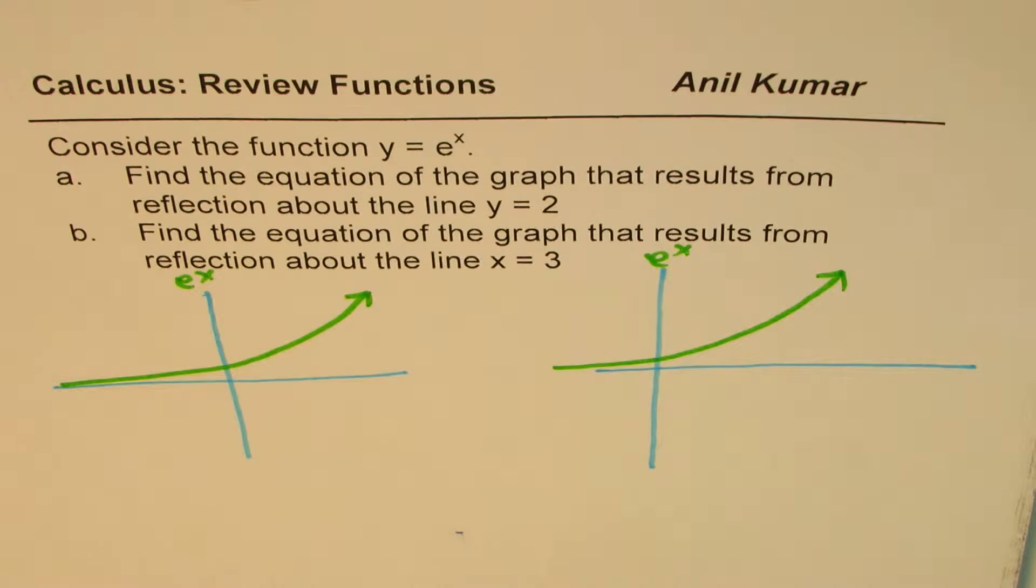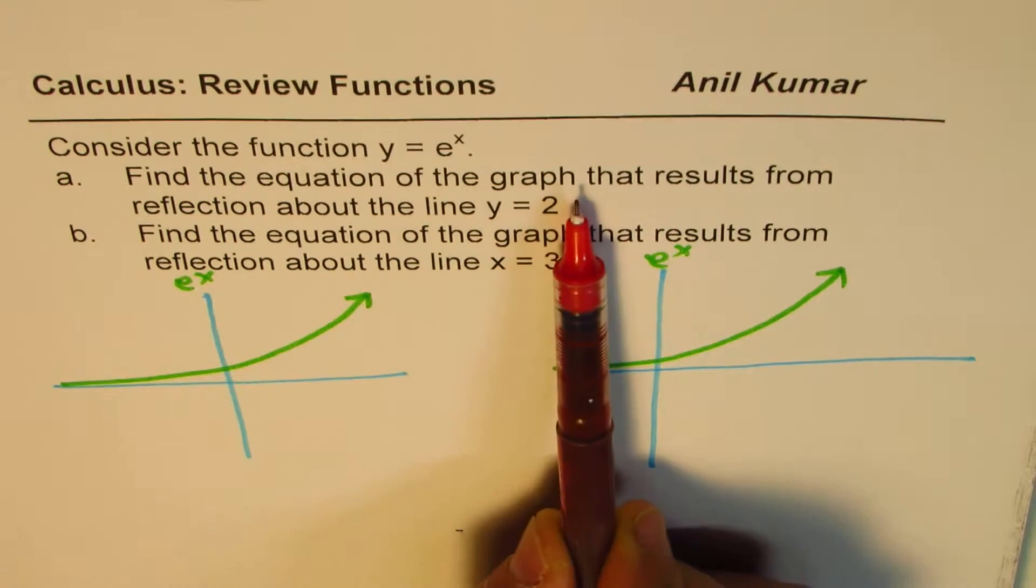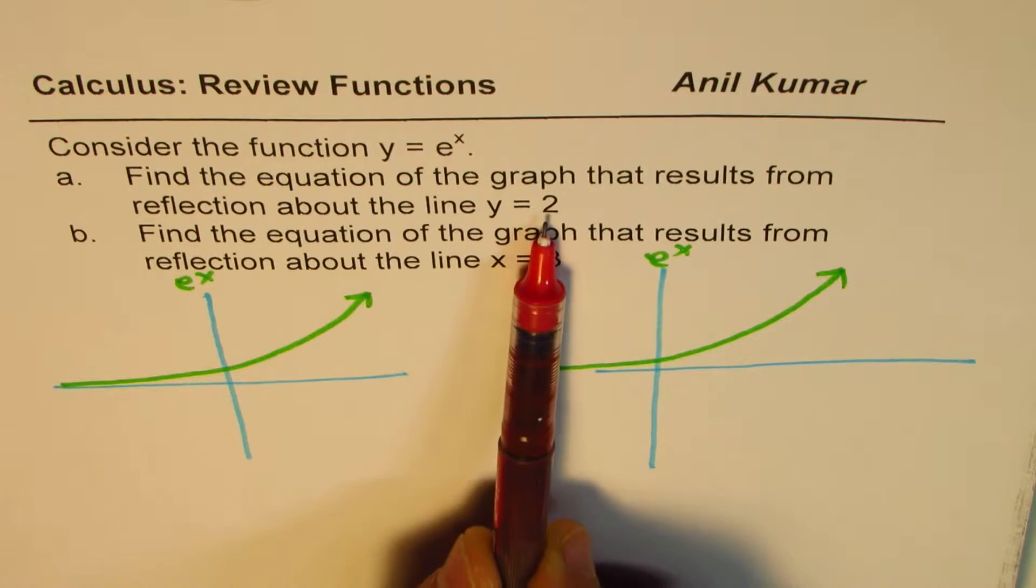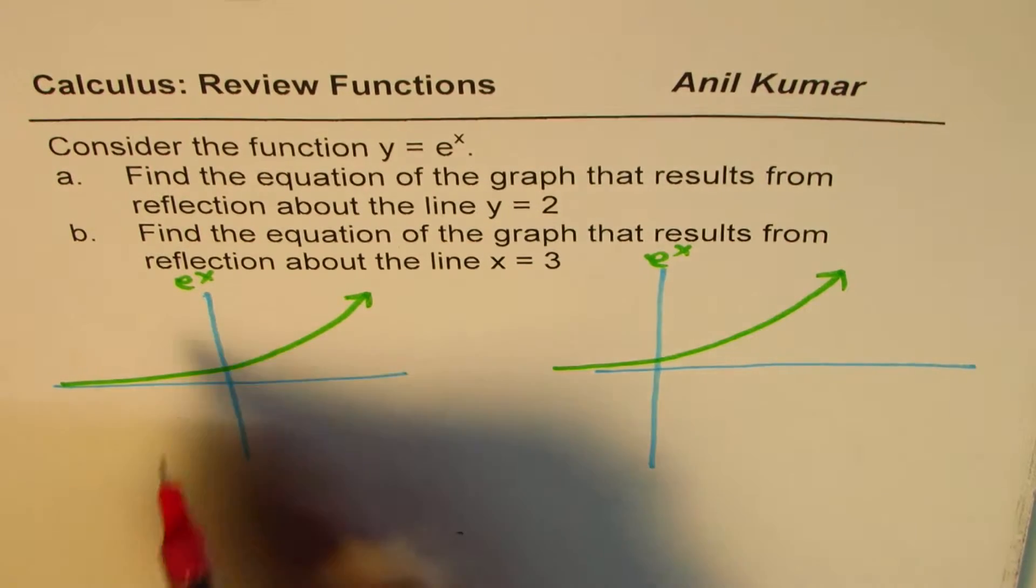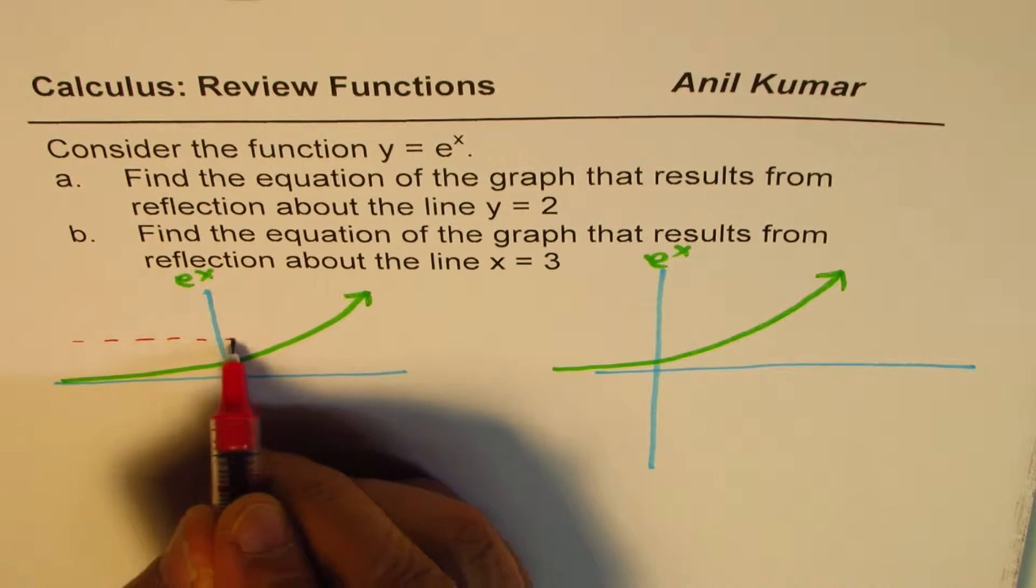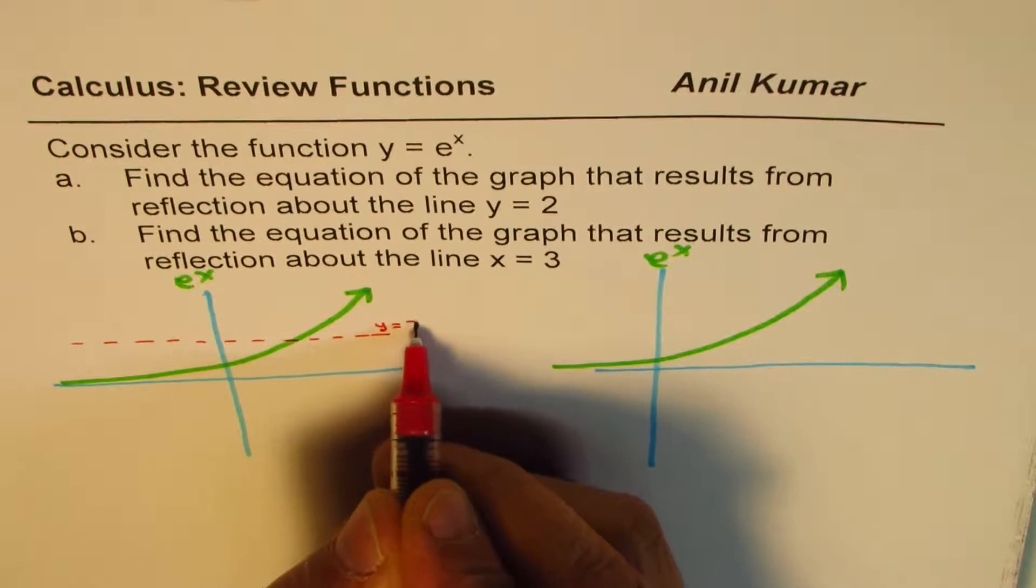Now, part A of the question is, find the equation of the graph that results from reflection about the line y equals 2. Now, what is that line y equals 2? Line y equals 2 will be a horizontal line. This line is y equals 2.